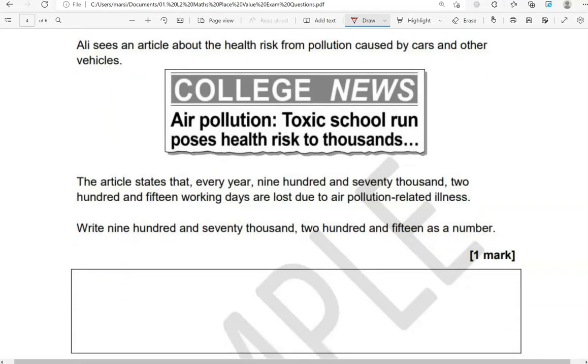Ali sees an article about the health risk from pollution caused by cars and other vehicles. The article states that every year 920,215 working days are lost due to air pollution related illness. Write 970,215 as a number. So again 970,000. So 1, 2, 3, 1, 2, 3. 970,000, 215.